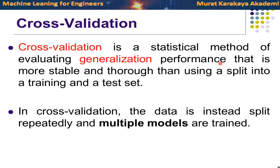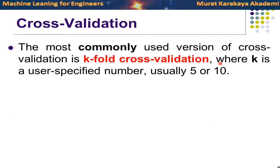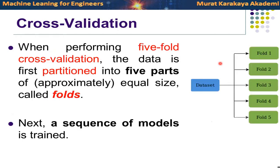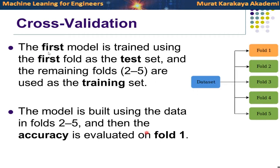In cross-validation we train multiple models with different selected training sets. The most commonly used version is k-fold cross-validation. K is the parameter which specifies how many folds we are going to use — three, five, or ten. When we begin with our dataset and select k as five, we perform five-fold cross-validation. At the beginning of training, we divide the dataset into five folds, distributing all samples across those five different folds.